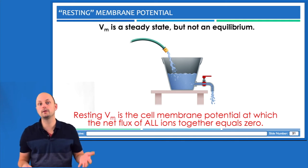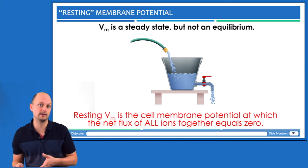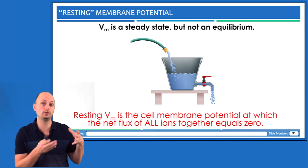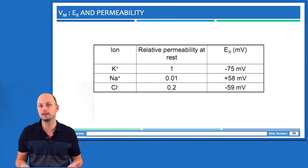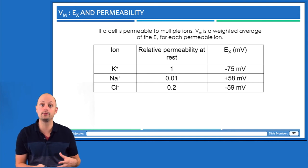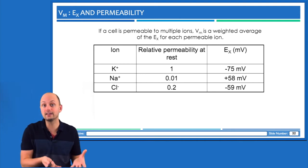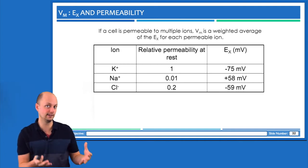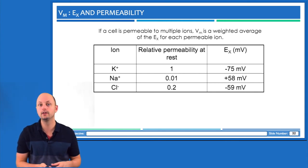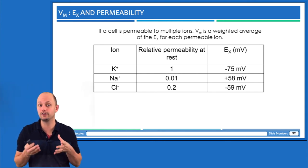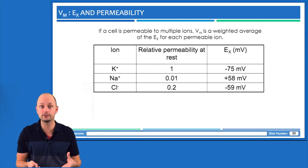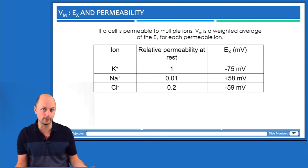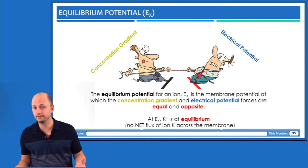Equilibrium potential and membrane potential are different but related concepts. The relationship is that equilibrium potentials help to determine membrane potential. We can think of membrane potential as basically being a weighted average of equilibrium potentials, and the weight is the permeability of that ion, which is different for each ion. In this table, you can see that potassium has the relatively highest permeability at rest, and sodium has the lowest relative permeability at rest.